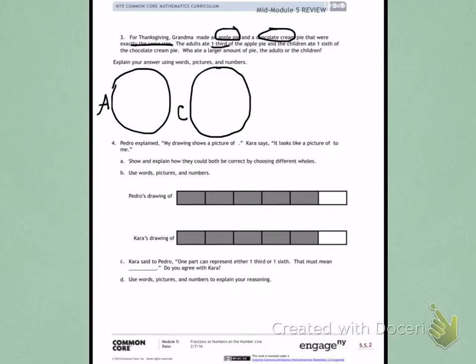The adults ate one-third of the apple pie, so I'm going to carefully partition my apple pie into three equal parts, and I'm going to shade one-third to show what the adults ate.